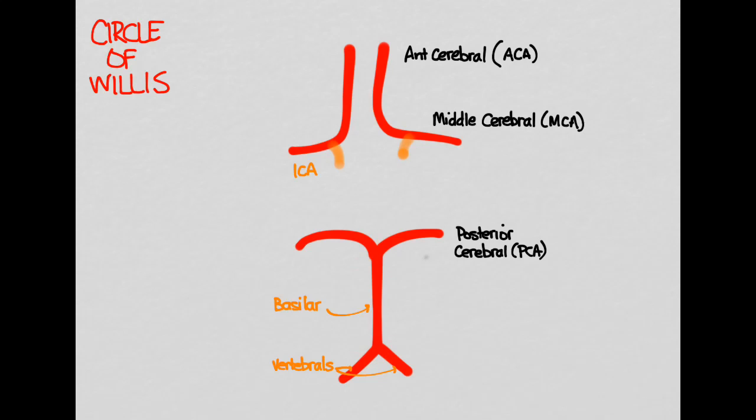So in orange I've drawn here how the posterior circulation, the anterior circulation, where they get their blood supply from. Now in order to make this a circle, everything needs to connect. And they do through communicating arteries. So the anterior circulation connects there through the anterior communicating artery. And the posterior circulation connects to the anterior circulation through the posterior communicating arteries.